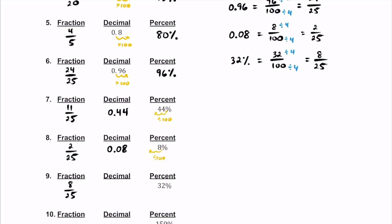Now I'll do the decimal second. Where's the decimal initially? It's after the 2, all the way to the right. Let's turn it into a decimal by dividing by 100 and moving to the left two times. So that's going to be 0.32, which is also 32 hundredths.